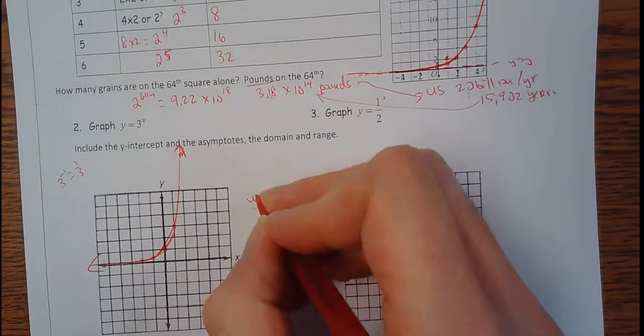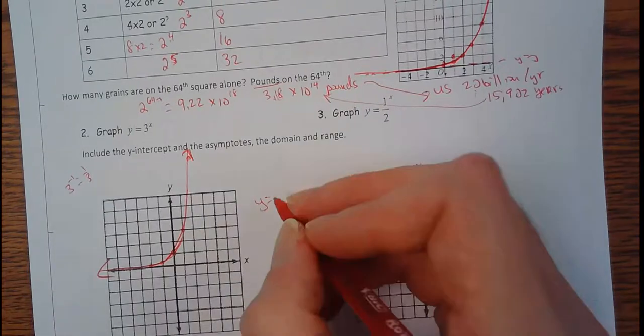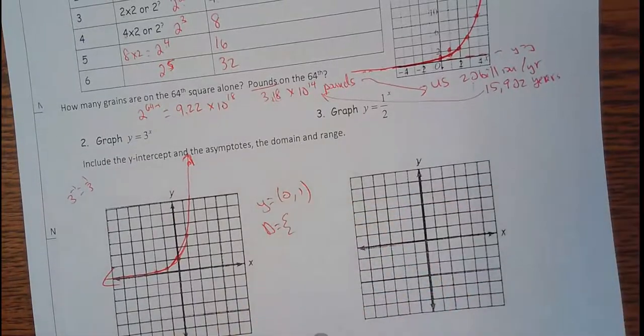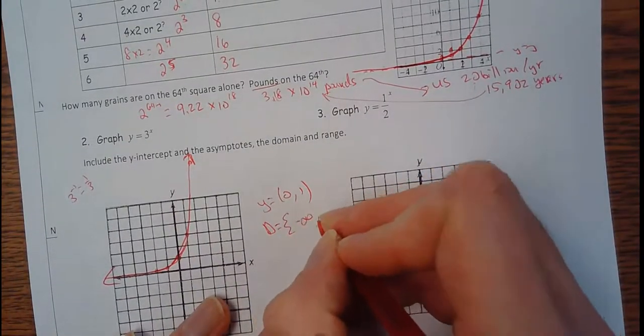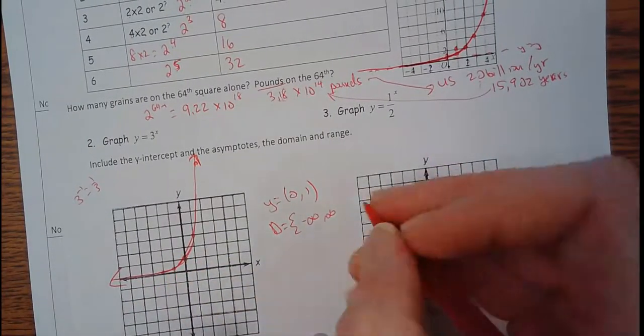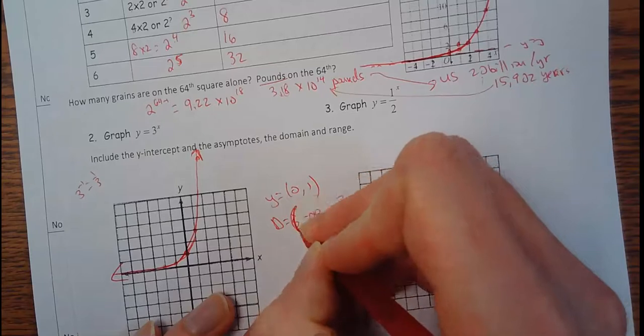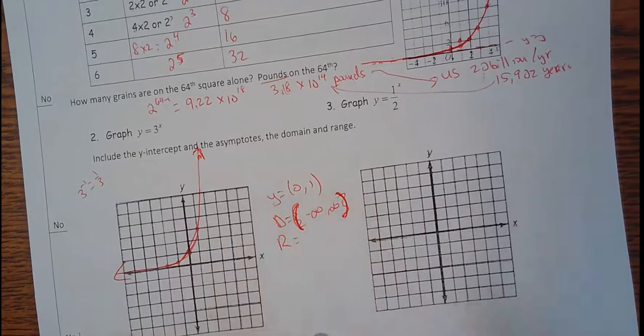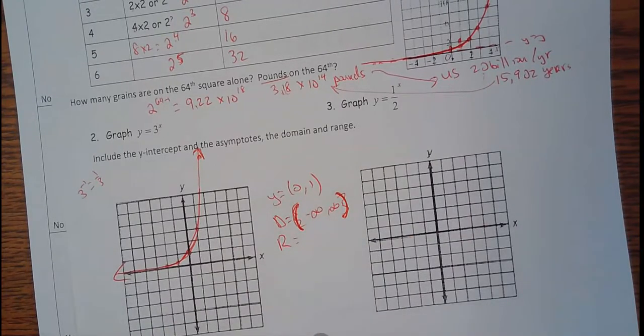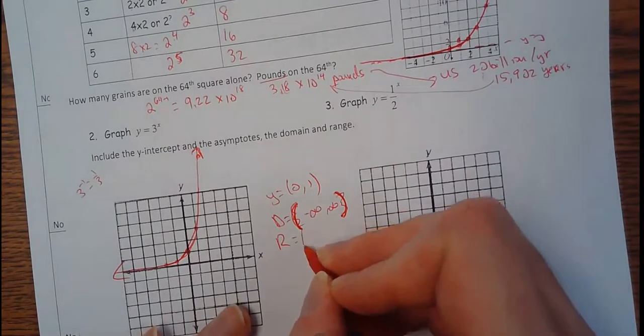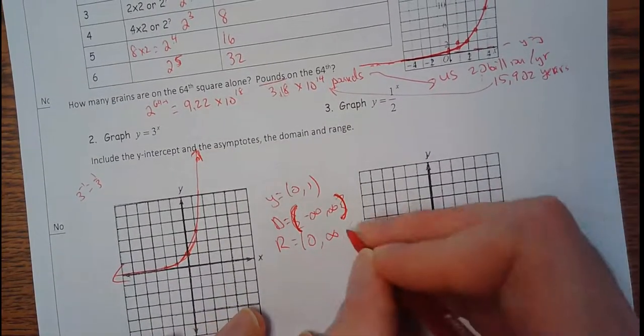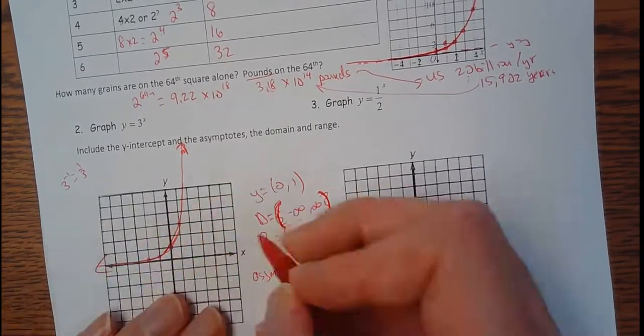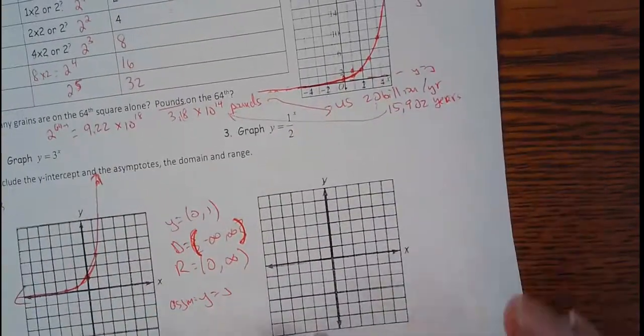My y intercept on this, any y intercept is plug in zero and see what you get. So zero, one. The domain, and this is true of any exponential, the domain is going to be from negative infinity to infinity because it goes left forever, it goes right forever. I can plug anything in. And then the range with exponentials, there is going to be an asymptote, a horizontal asymptote. So on this one is from zero to infinity is my range. And my asymptote is y equals zero.